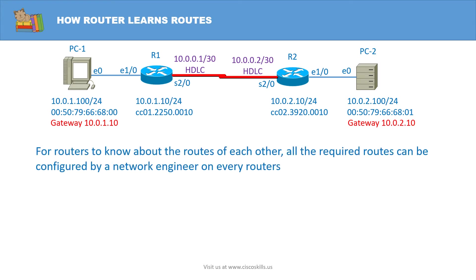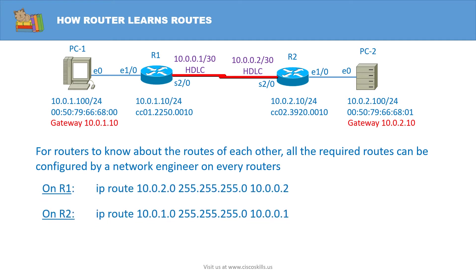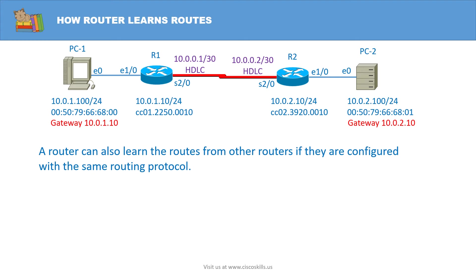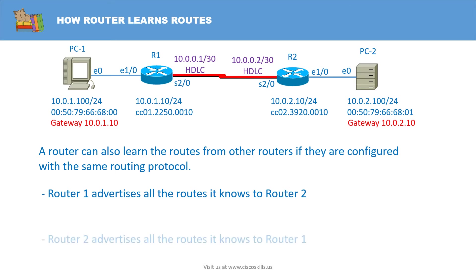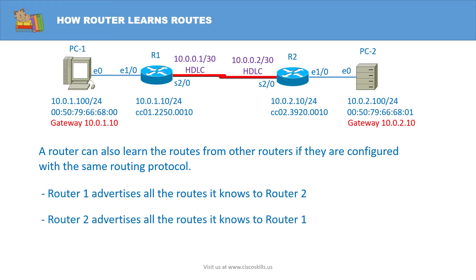Let's continue with static routes. For routers to know about the routes of each other, all the required routes can be configured by a network engineer on every router. Here's how you configure static routes on router 1 and router 2. You can see this method is not practical in a big network. A better way is that a router can also learn routes from other routers if they are configured with the same routing protocol. Router 1 advertises all the routes it knows to router 2, and router 2 advertises all the routes it knows to router 1.